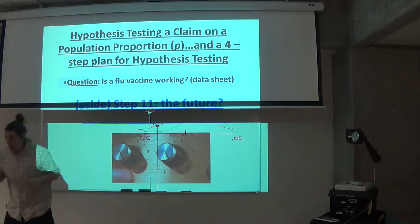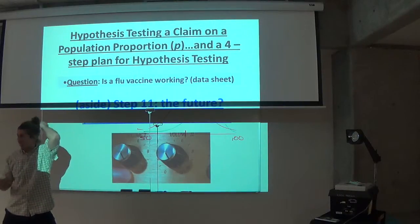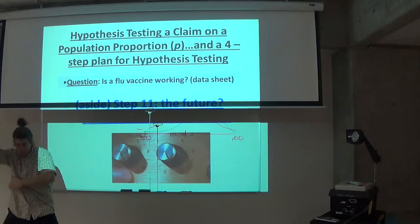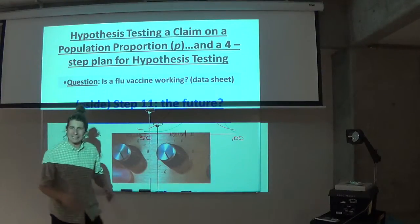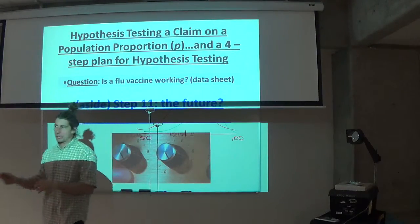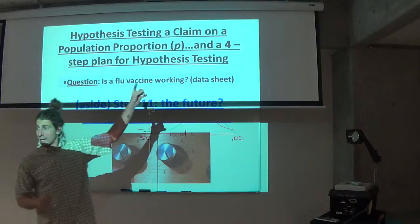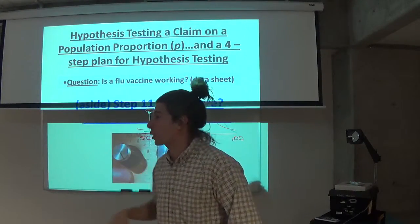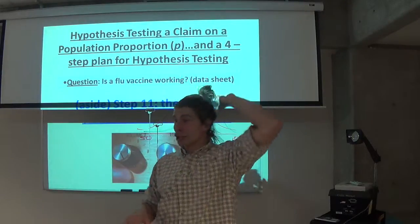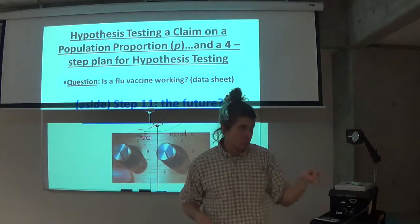Okay. So the topic for today, most of which is going to be done on the board and on those little sheets I just gave you, is how can we test a claim about a population proportion (p). Do you recognize the little p? He hasn't changed, he's the same as he was beginning the course. He's the percentage of something in the population that we're interested in.